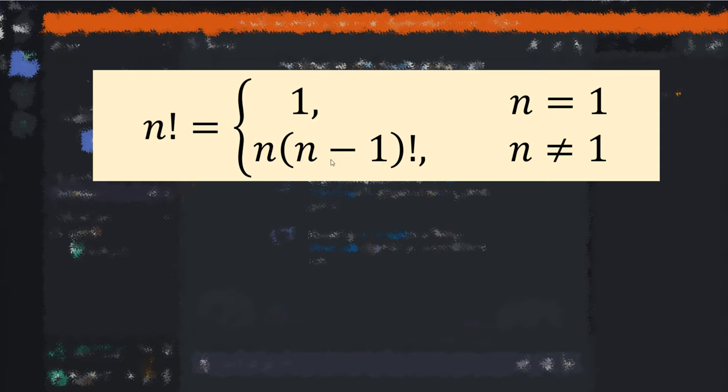In other words, in this case the factorial function is going to call itself with an argument that's less than 1 than the initial argument. Let's implement this recursive formula in our program.